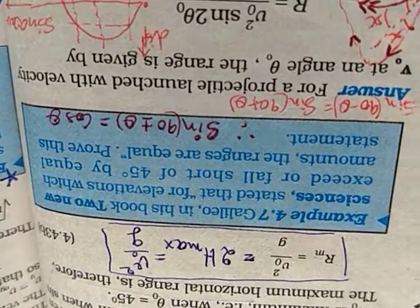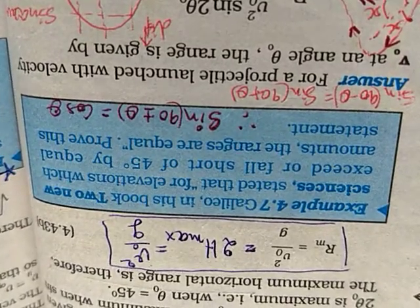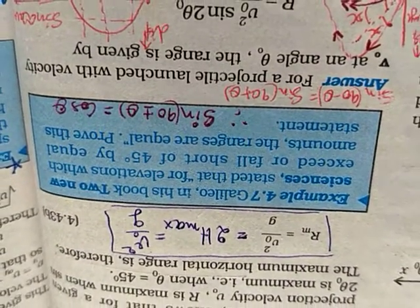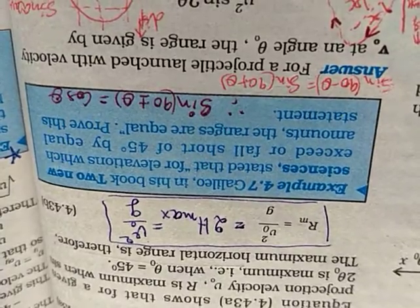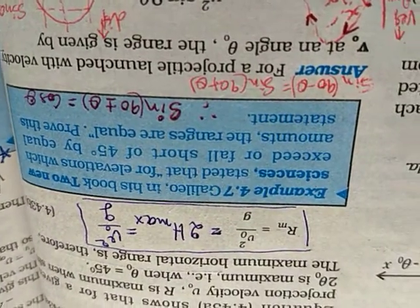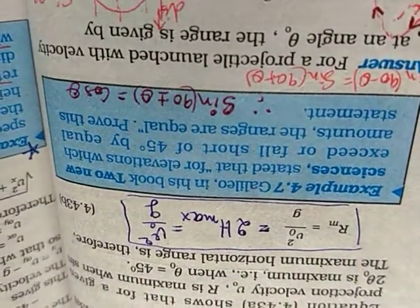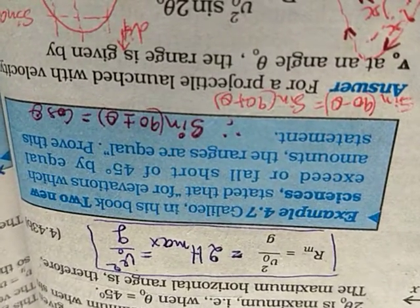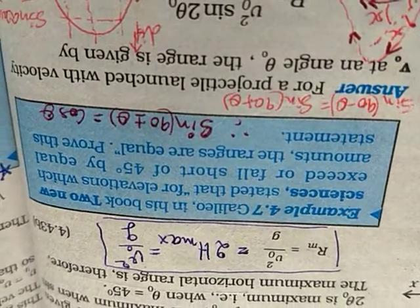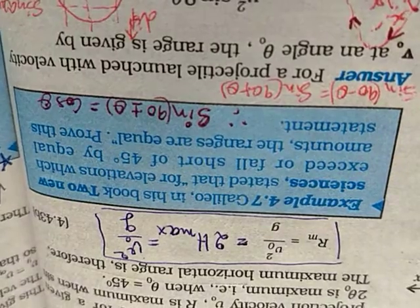it deals with the great findings made by Galileo and written in his book Two New Sciences, where he stated that for elevations which exceed or fall short of 45 degrees by equal amounts, the ranges are also equal.